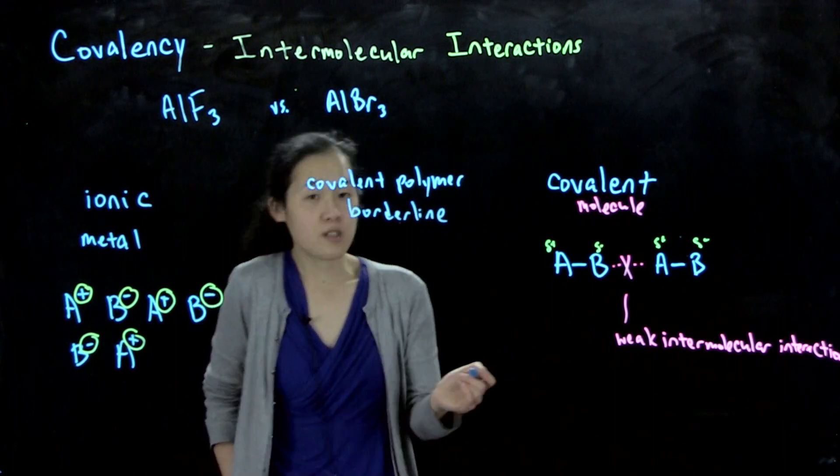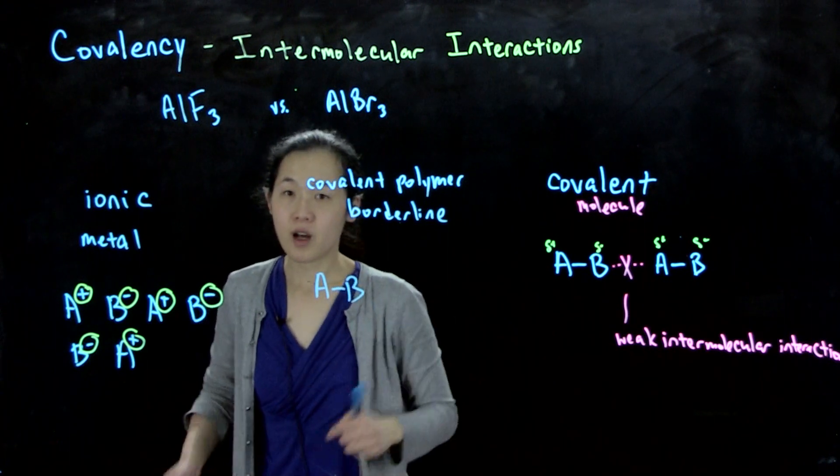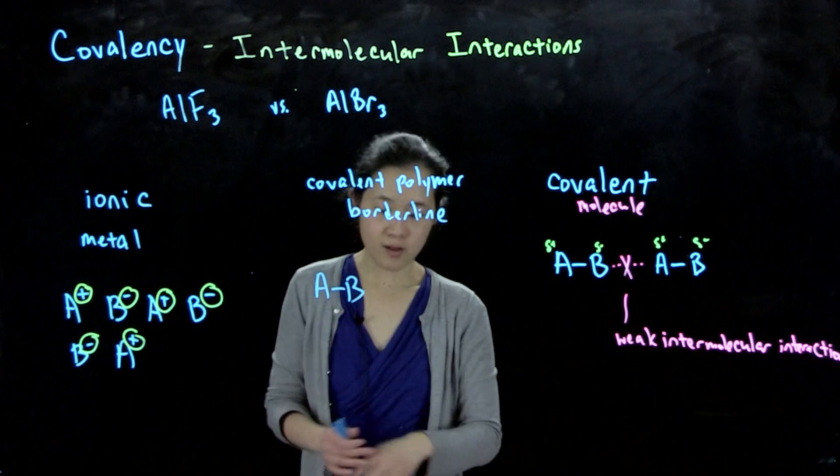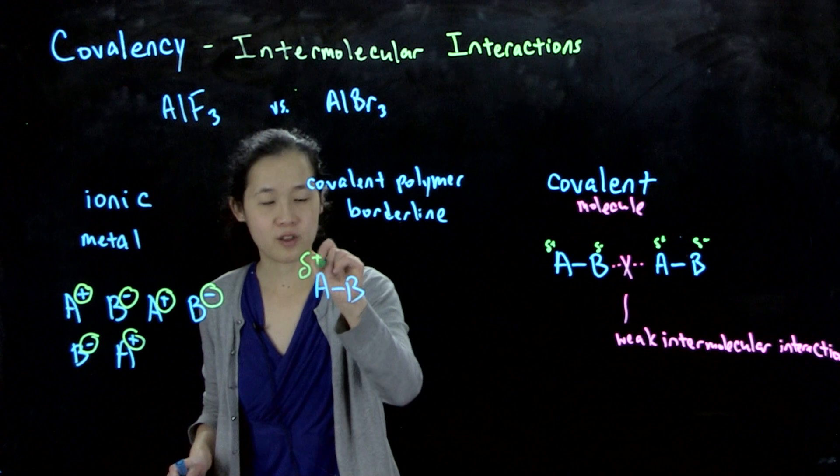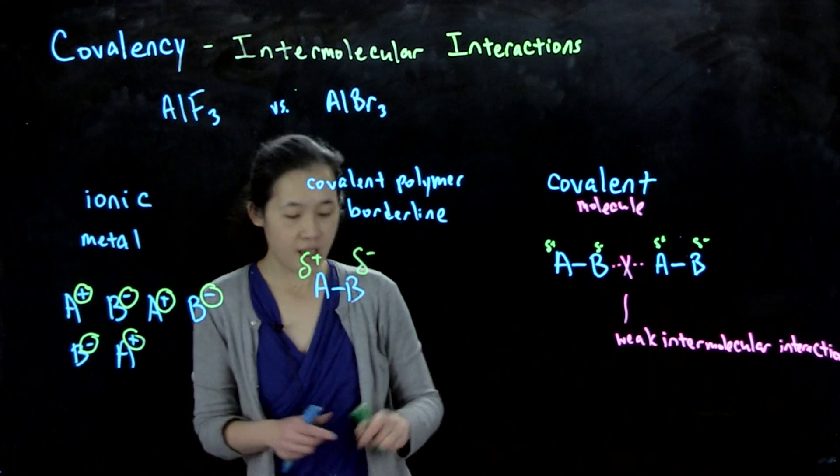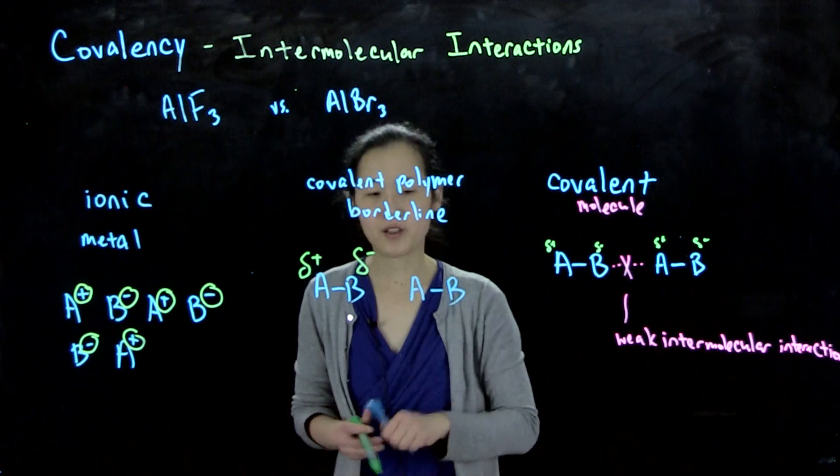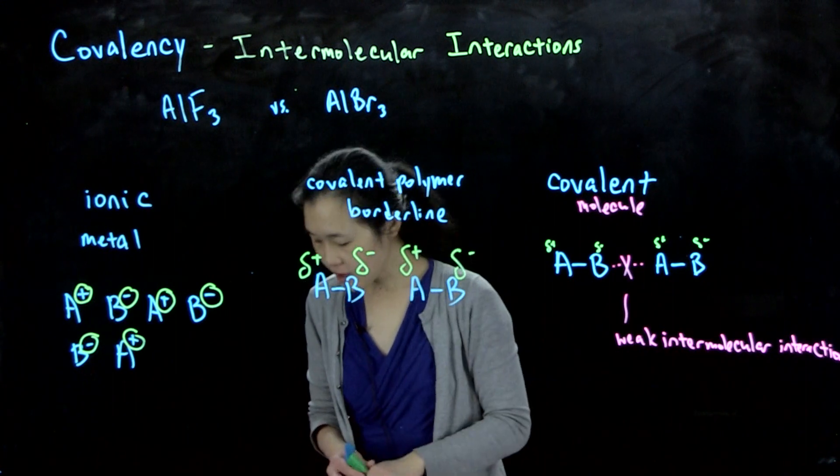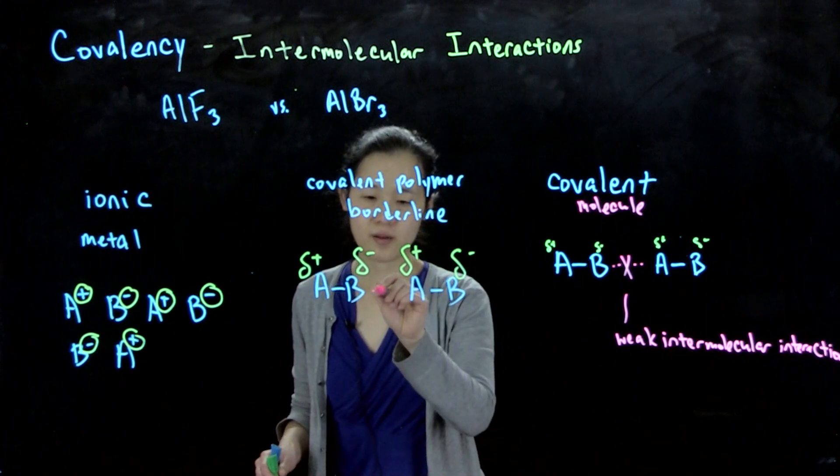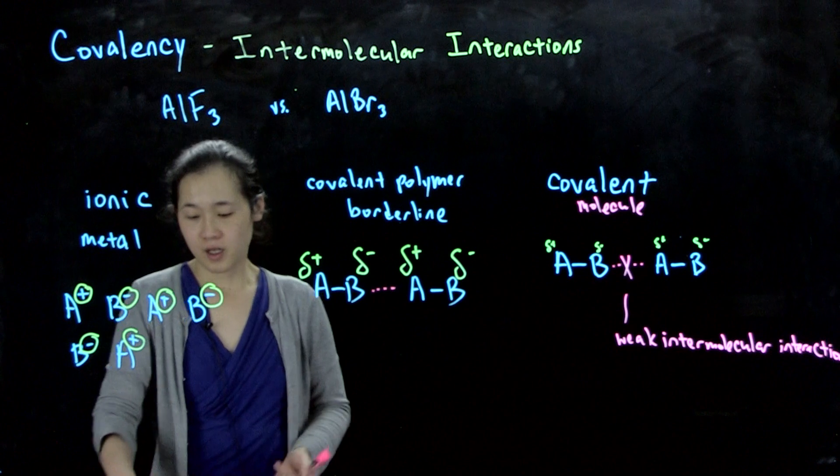This situation would be if we still have our AB bond, it's still sharing its electron density primarily within itself. But if we have bigger delta pluses, bigger partial charges, then when we have our neighboring molecule, we could form an interaction between the two. So we could form a long chain and we could have our covalent polymer.